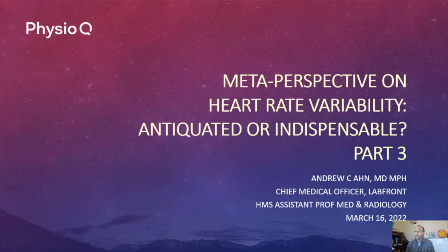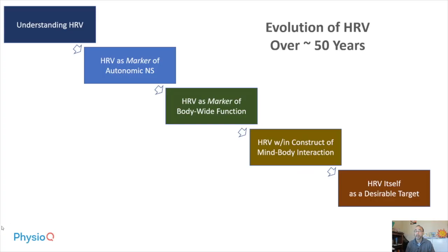The title of this talk is 'Meta Perspective on Heart Rate Variability: Antiquated or Indispensable.' This is how I interpret how HRV has evolved over the past 50 years, and I've divided it into five stages.